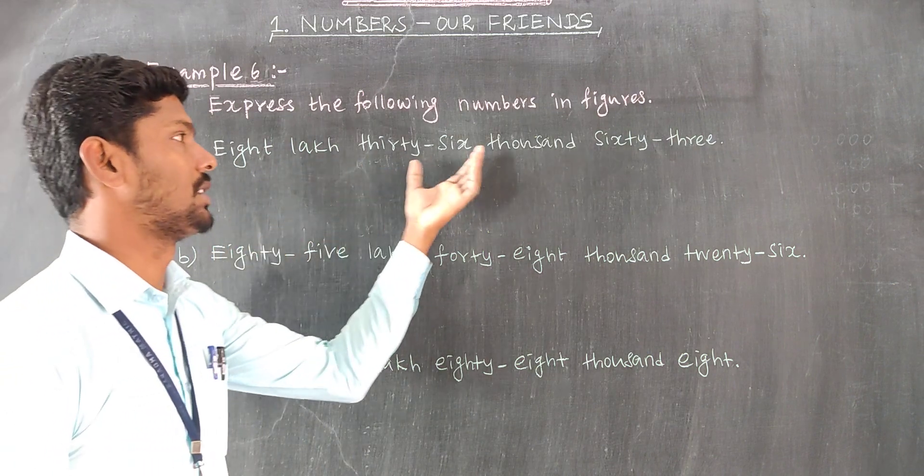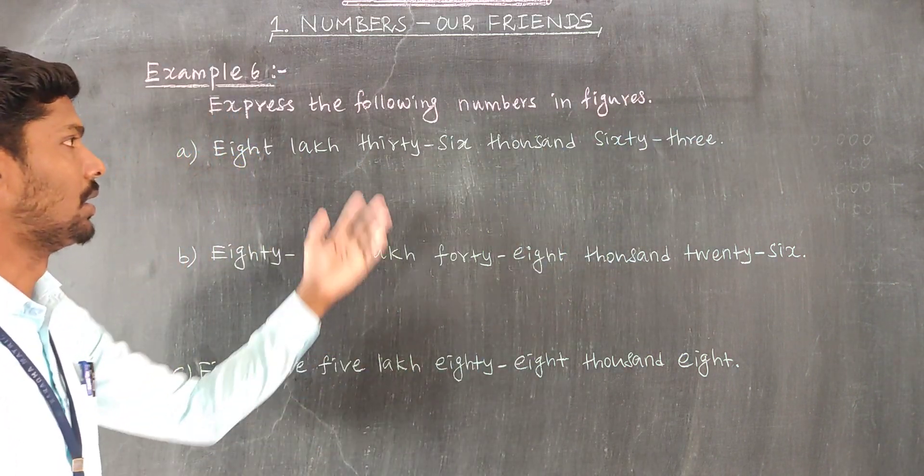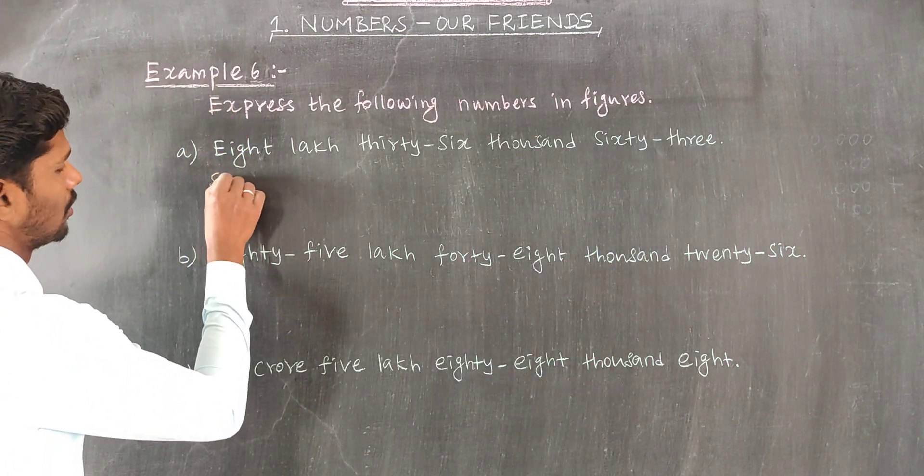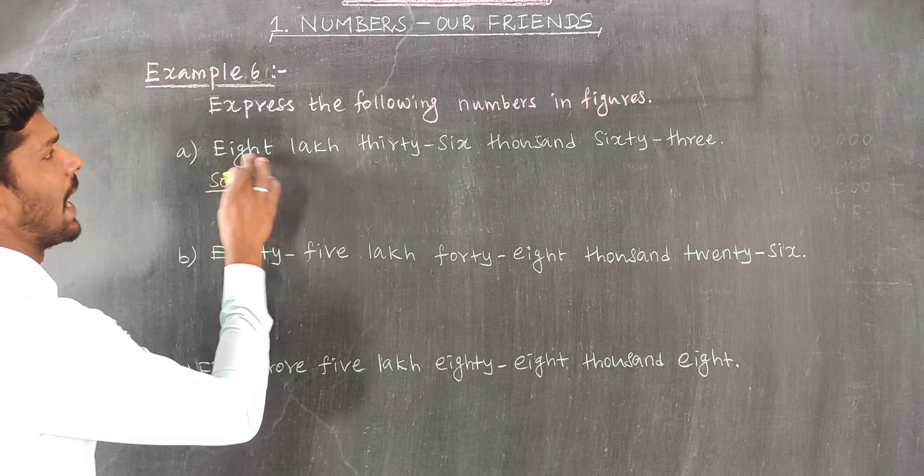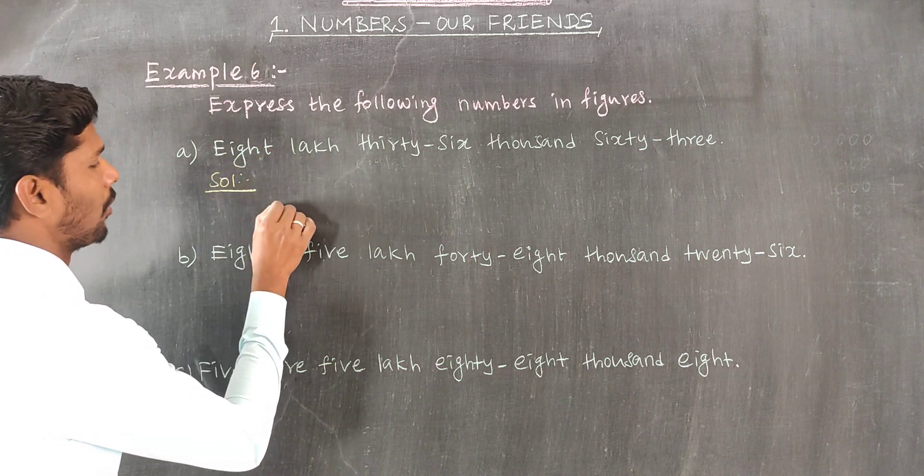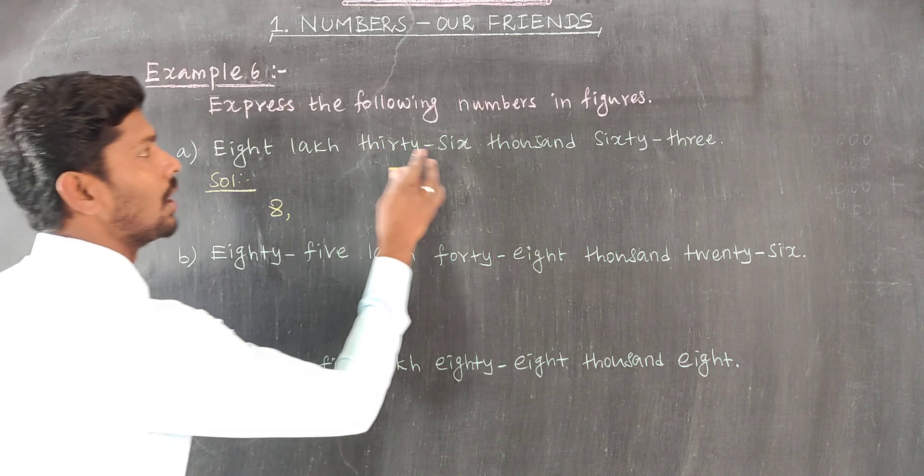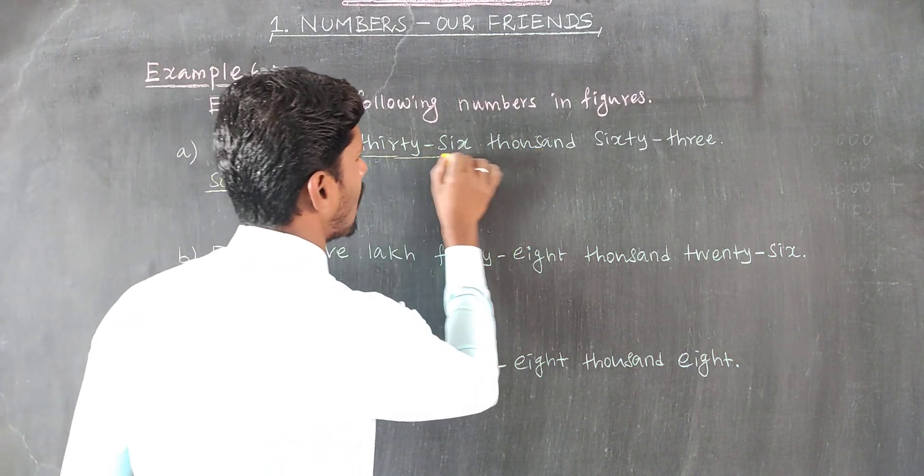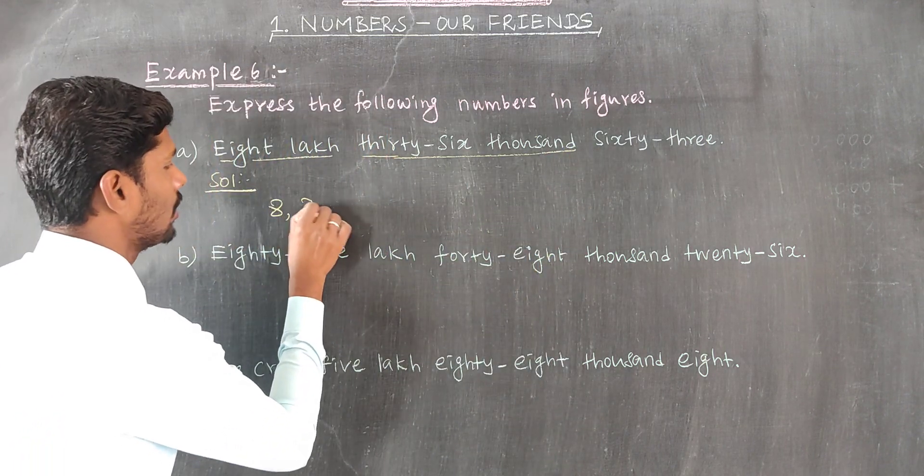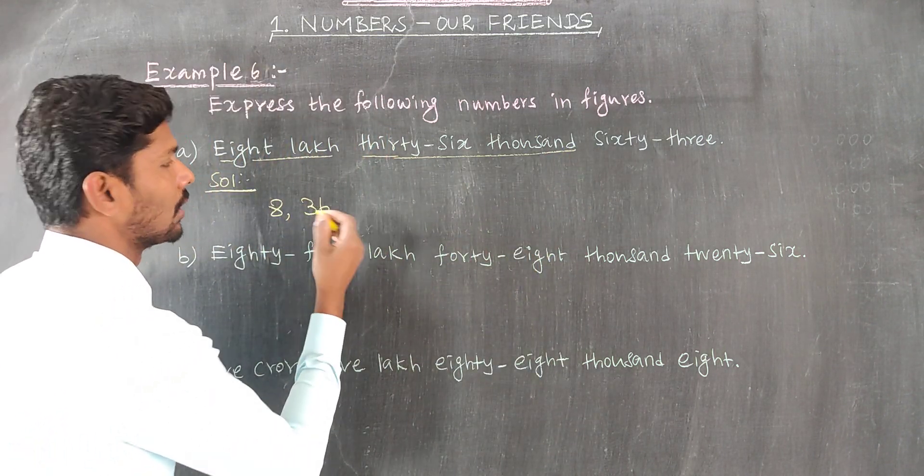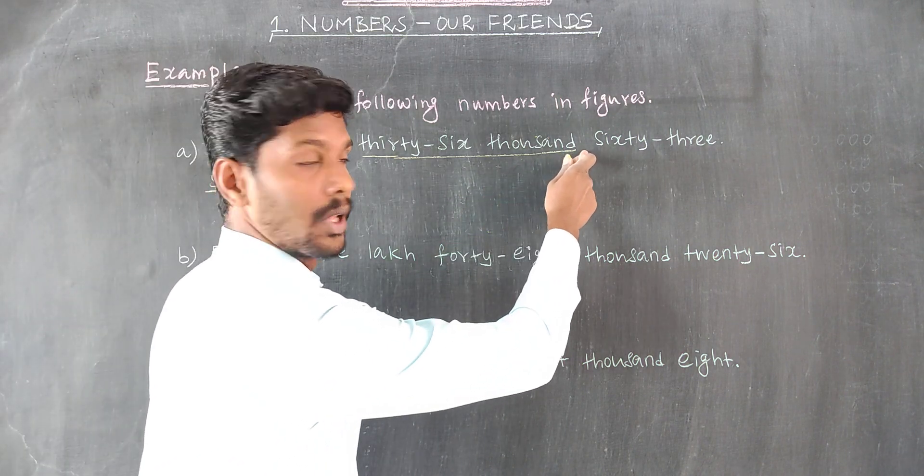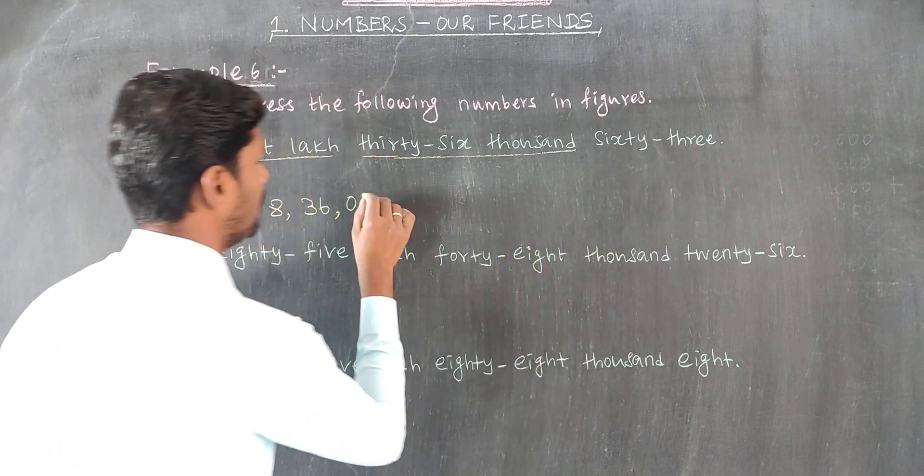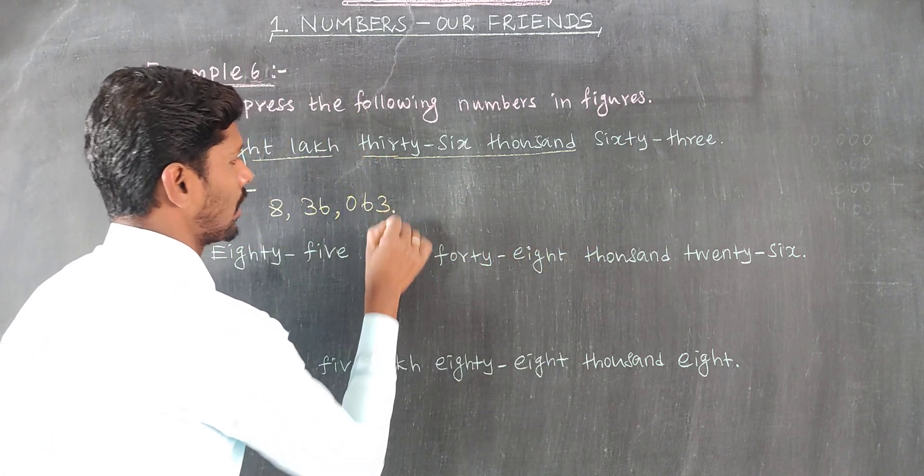Eight lakh thirty-six thousand sixty-three: 8,36,063. Solution: 8 lakh, that's 8,00,000; 36 thousand, that's 36,000; and 63. So 8,36,063. Okay, it's the next.